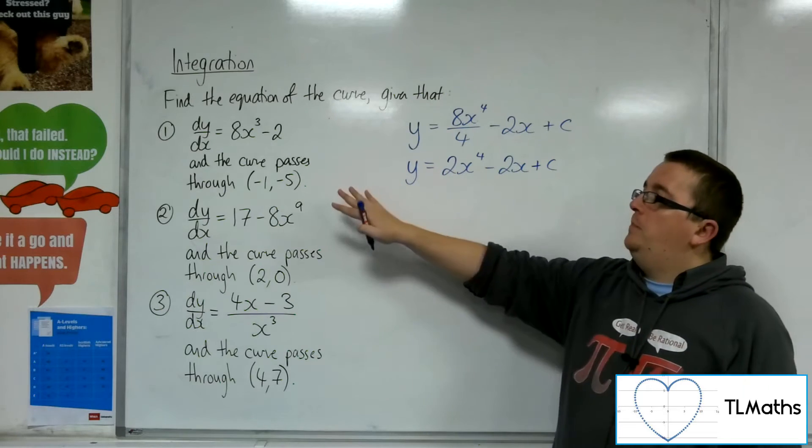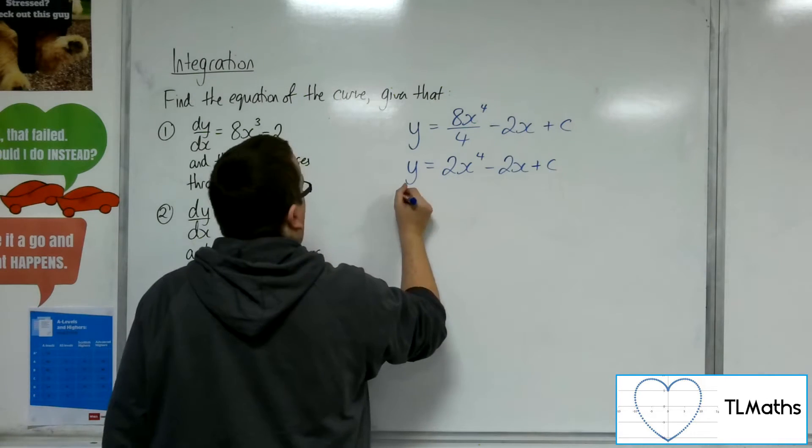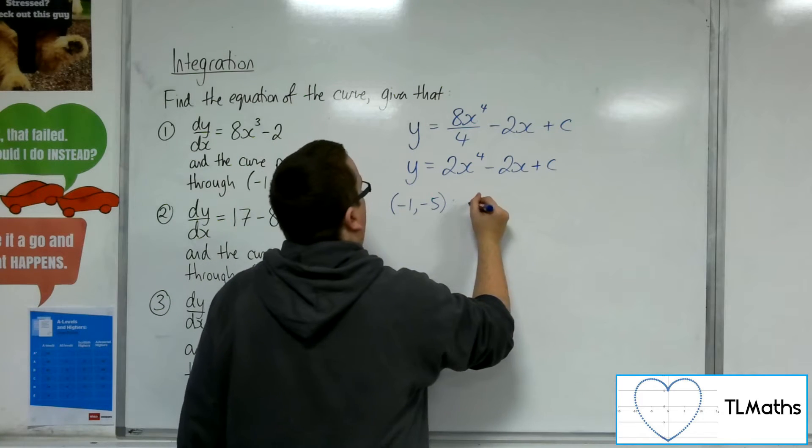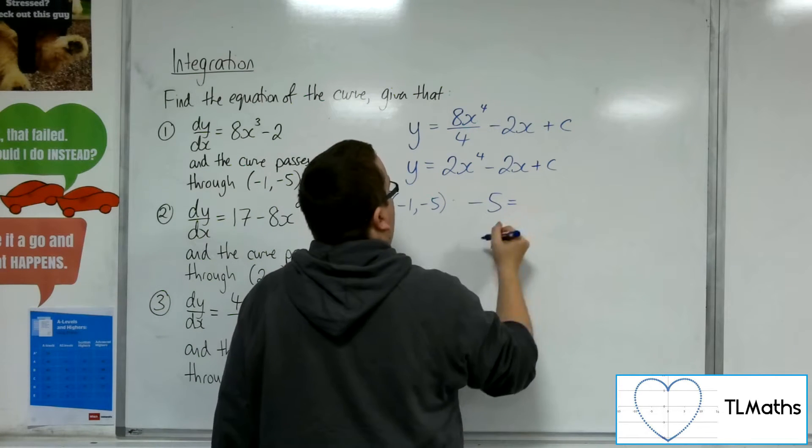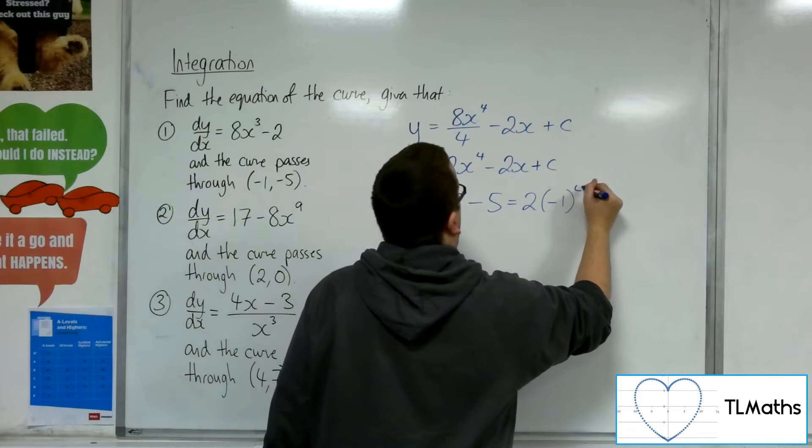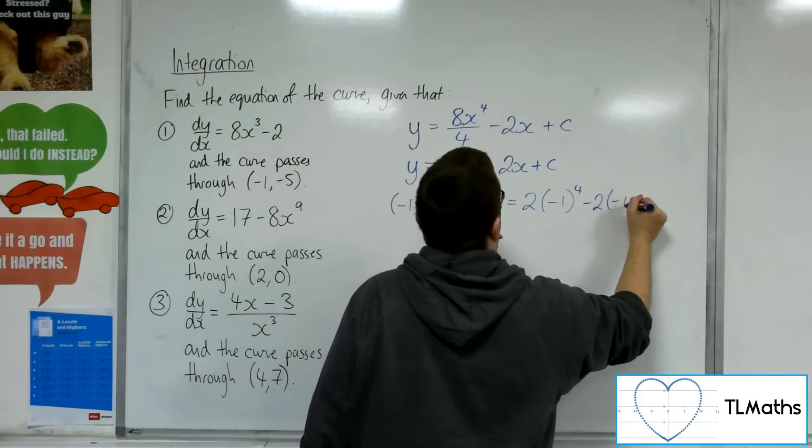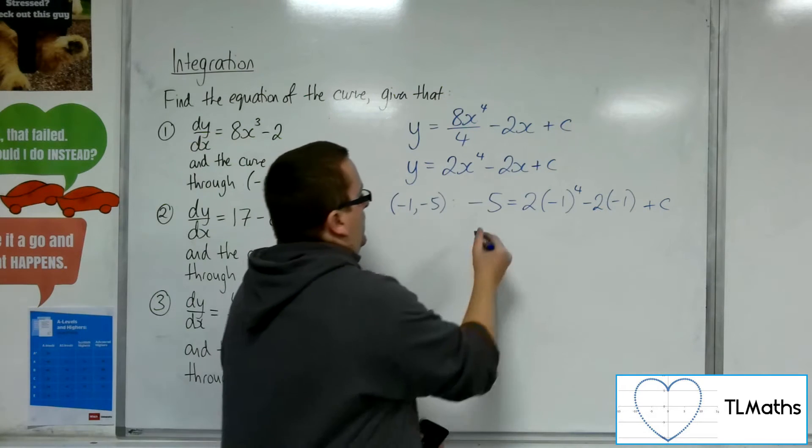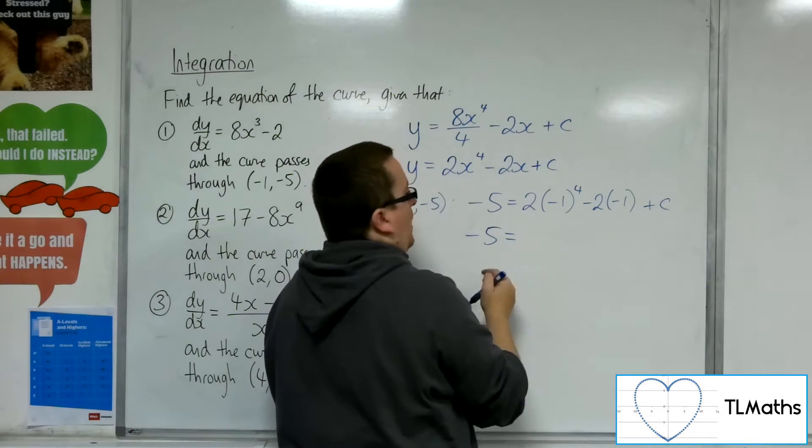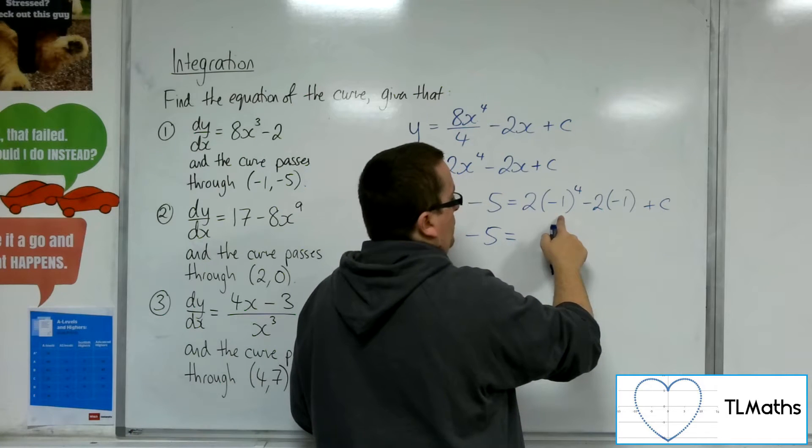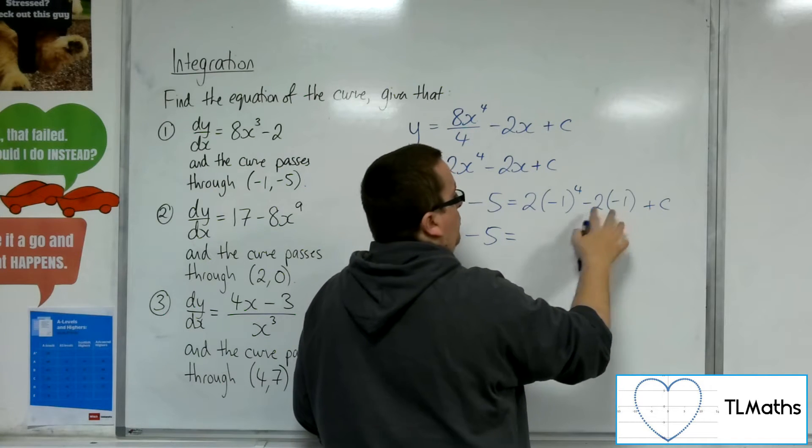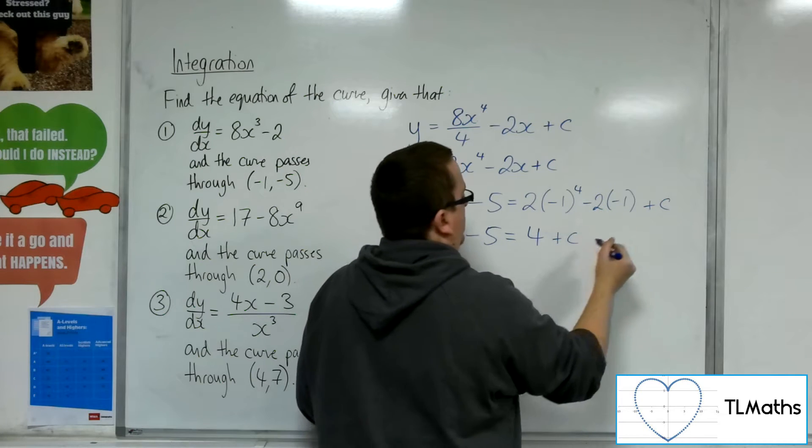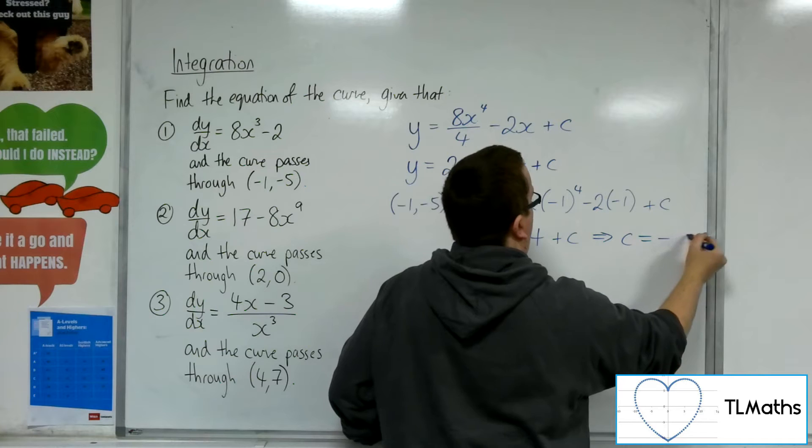And I'm told that it passes through (-1, -5). So I'm going to substitute in -1, -5 into that. So I'm going to have -5 is equal to 2 lots of (-1)⁴, take away 2 lots of -1 plus c. So the right-hand side of my equation is 2 lots of 1, so 2. And then we've got -2 times -1, which is 2 again. So 2 plus 2, which is 4. So c must be -9.